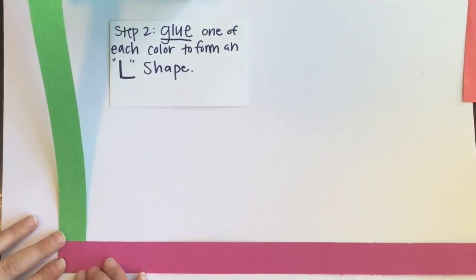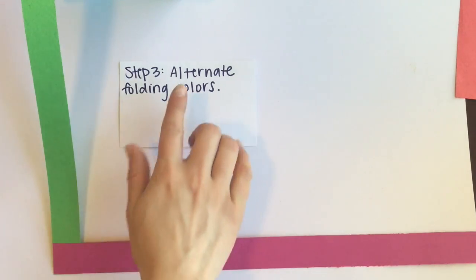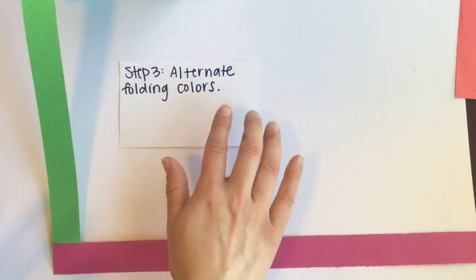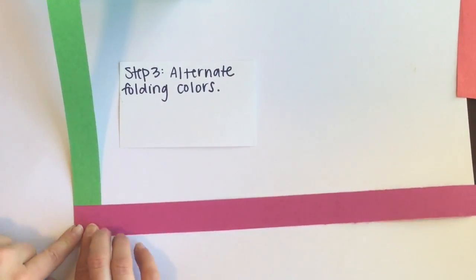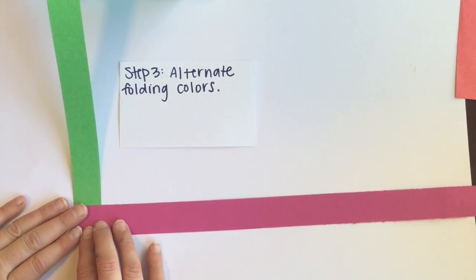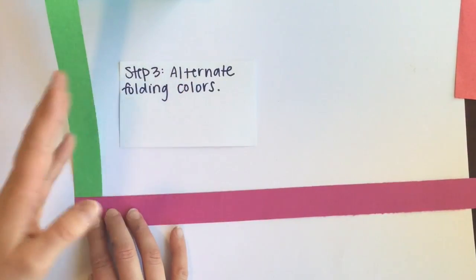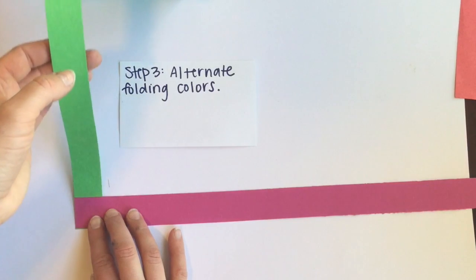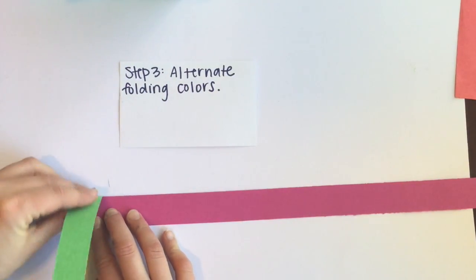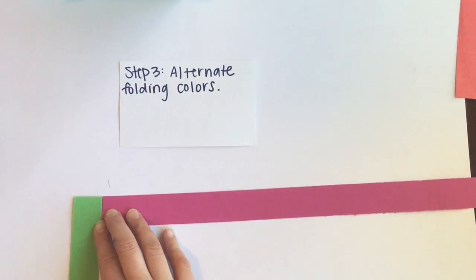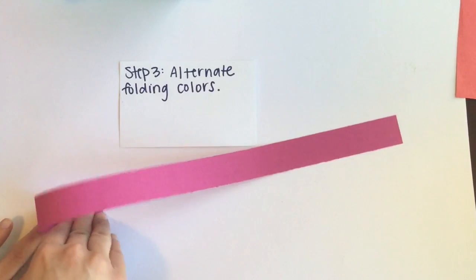Step three, you're going to alternate folding the colors. So I usually hold my paper strands to the table and start folding. So I'm going to choose green first and fold it over the magenta. Then I'm going to alternate and pick magenta and fold the magenta over.